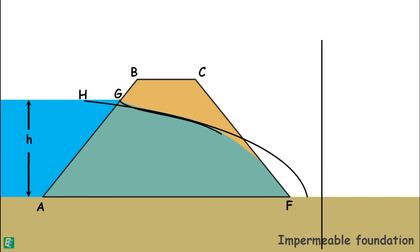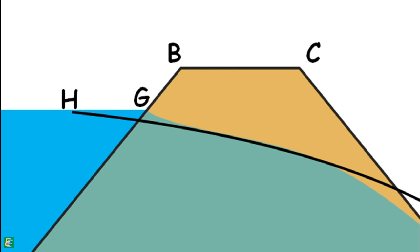To draw the phreatic line from this parabola, we make corrections. For the correction at the upstream, we draw a perpendicular line to the upstream face AB at point G, from where the top flow line originates, and gradually blend it into the parabola curve manually.